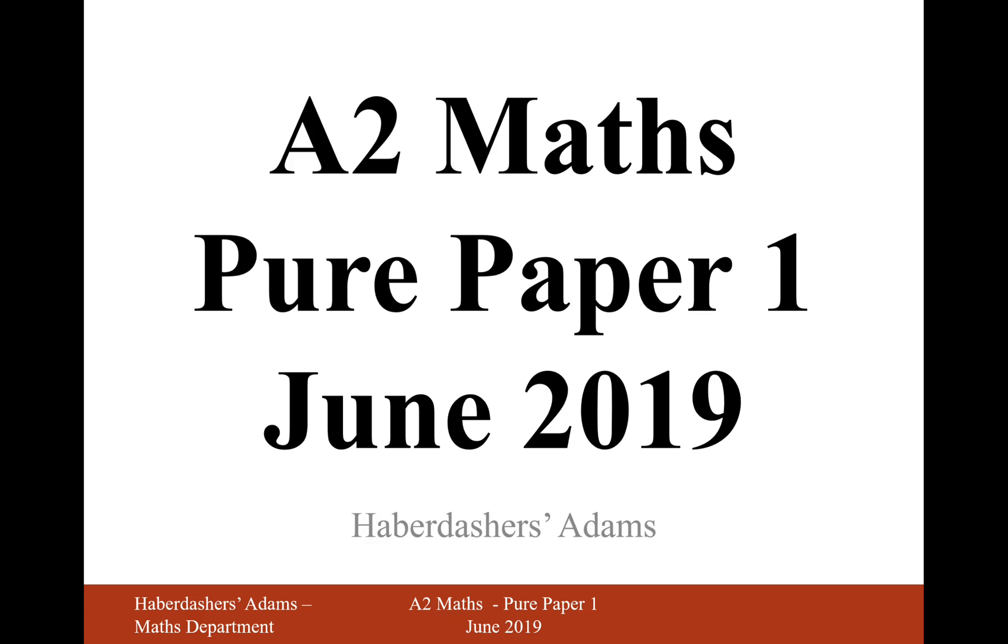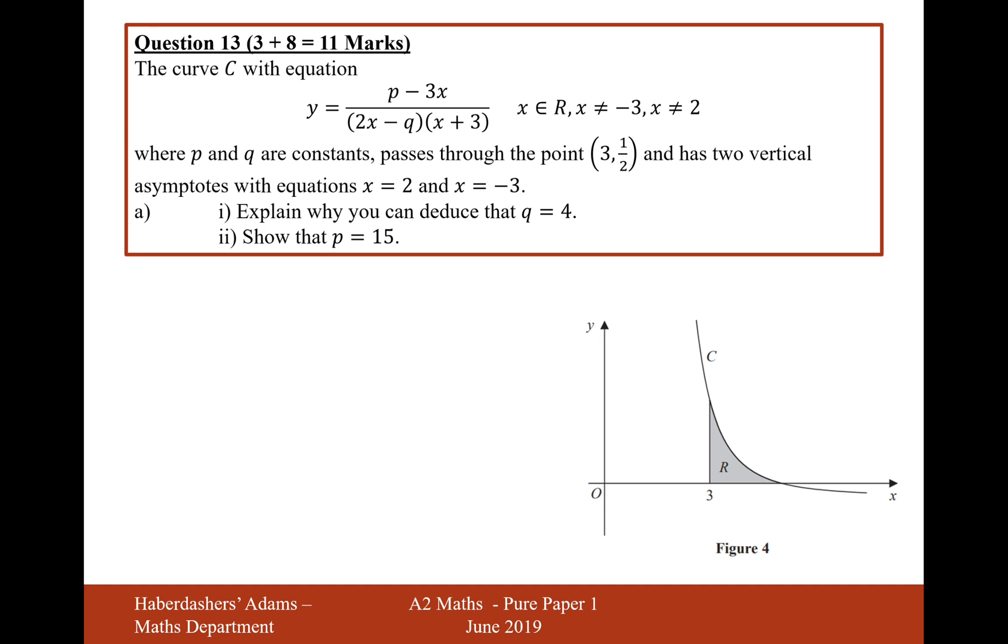Hello there and welcome to the June 2019 paper. Here we're looking at paper 1 for the A2 math session. We're on question 13 here. The curve C with the equation y equals this thing here, where p and q are constants, passes through the point 3 and a half and has two vertical asymptotes with the equation x equals 2 and x equals minus 3. Explain why you can deduce that q equals 4.